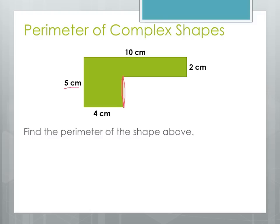Let's look at all the vertical sides. We've got a vertical side of 5 and a vertical side of 2, with an unknown side. If we slide that 2 over, the two vertical pieces must add up to 5 centimeters — so 2 plus what gives us 5? That's 3. Similarly, looking at the horizontal sides, we've got 4 and 10, with an unknown. Sliding the 4 up: 4 plus what gives us 10 centimeters? That's 6.